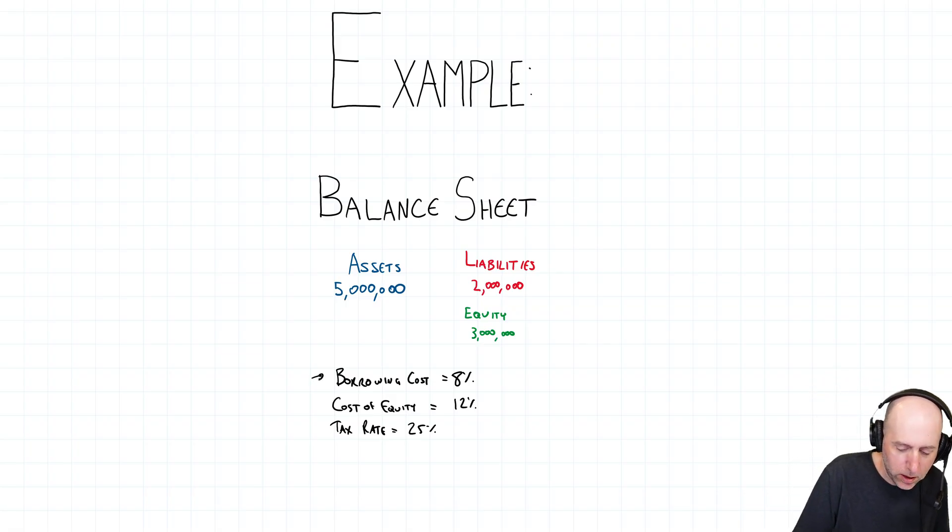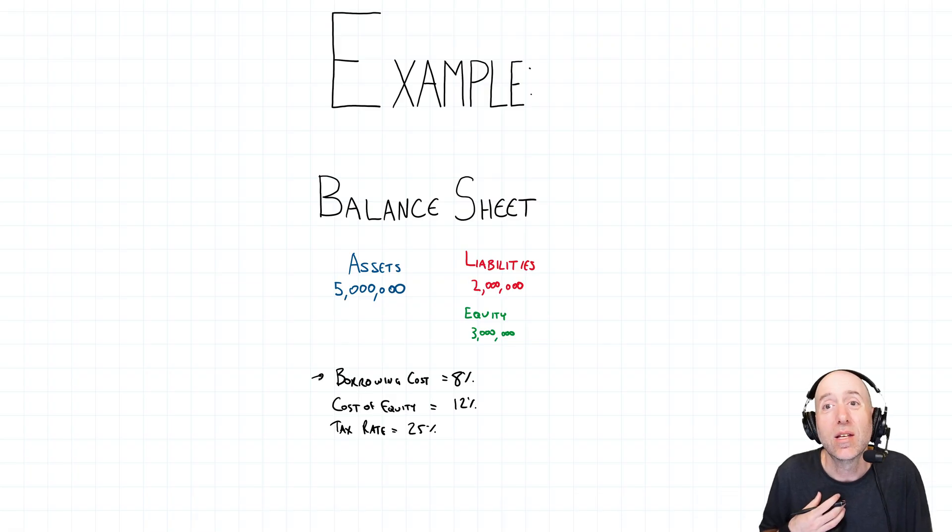So we would determine the borrowing cost by looking at things like our bonds and the yield to maturity on our bonds. That is our borrowing cost. So let's say we did some calculations and you will likely have to do this. When you do the chapter, you'll have to figure out, with bond math from chapter four, figure out the yield to maturity, the I on the bond, the rate of return on the bond. And let's say our bond rate is 8%.